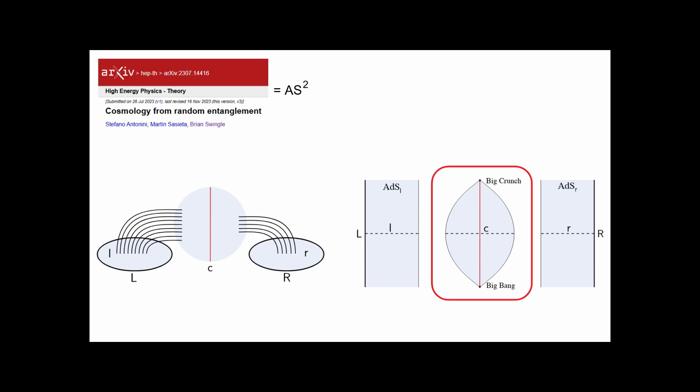This closed universe, denoted C, has a Big Bang singularity followed by a period of expansion and eventually crunches again in the future.